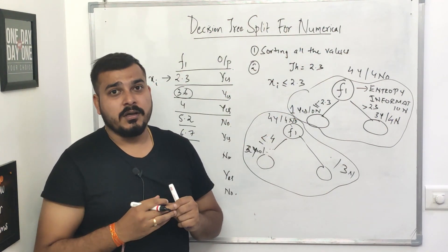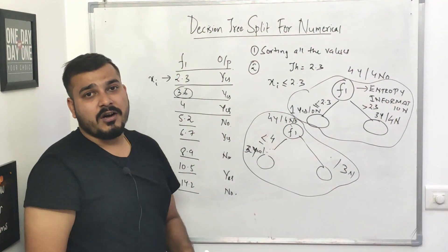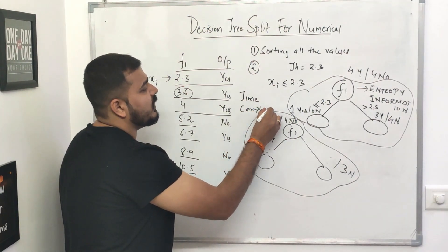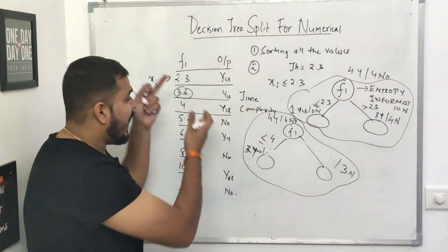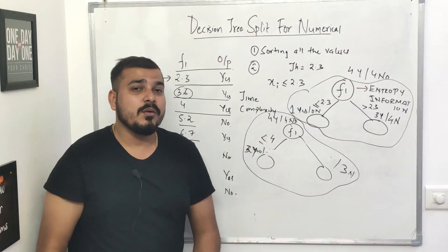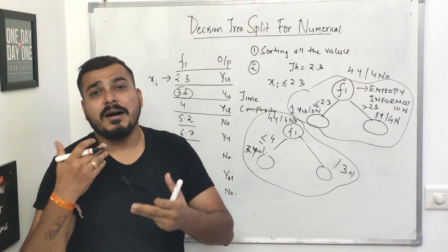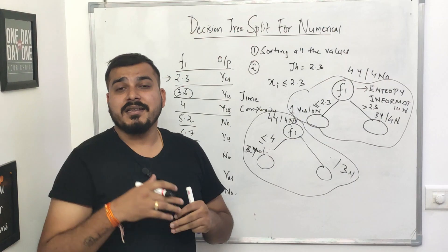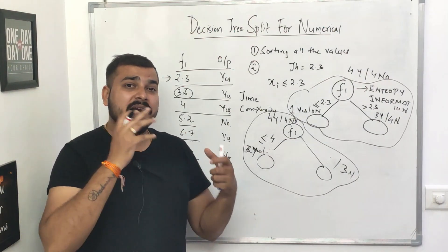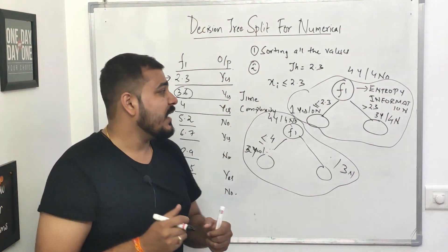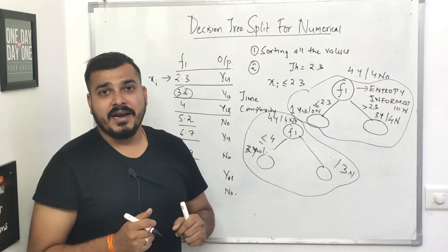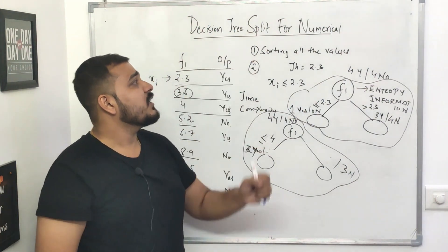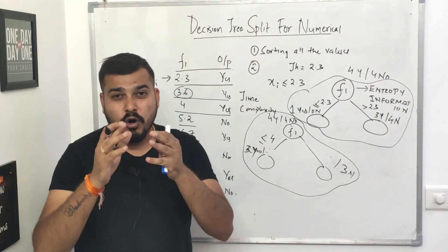There is a disadvantage to consider: suppose you have millions of records. The time complexity for performing this operation is very large and keeps increasing as the number of records increases. Decision trees with numerical variables take a lot of time for training. This also applies to ensemble techniques like Random Forest and XGBoost, where internal decision trees are used — training time increases significantly as input size grows.